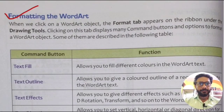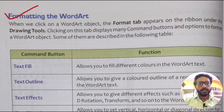The next heading is formatting the Word Art. When we click on a Word Art object, the Format tab appears on the ribbon under Drawing Tools. Clicking on this tab displays many command buttons and options to format a Word Art object.